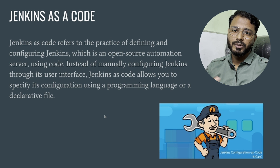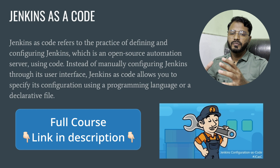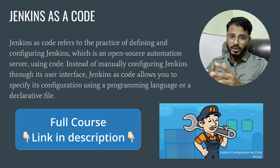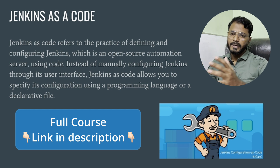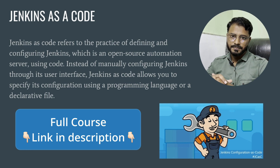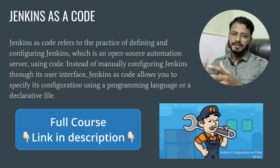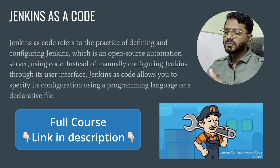So far we have two jobs: one is a freestyle job, another one is a pipeline job. Now we are going to see Jenkins as code — that is, Jenkins configuration as code. Jenkins as code refers to the practice of defining and configuring Jenkins as code, so we are not going to configure Jenkins on a fresh installation. Rather, we will write code to configure Jenkins with required plugins, jobs, and variables — everything that we have created so far manually will be automated.